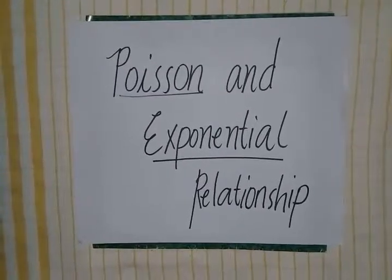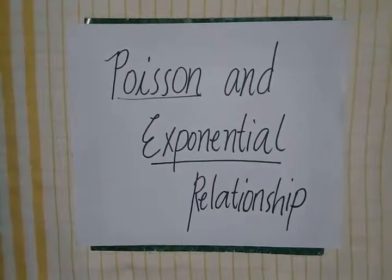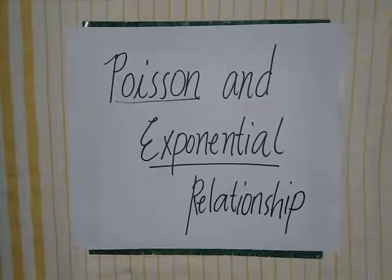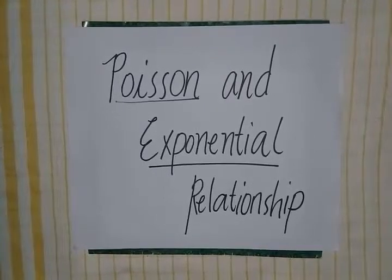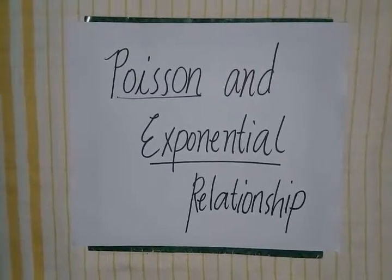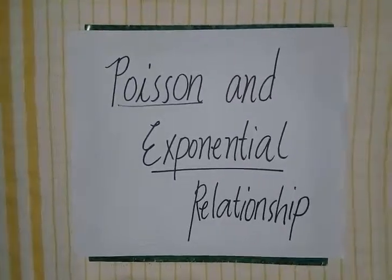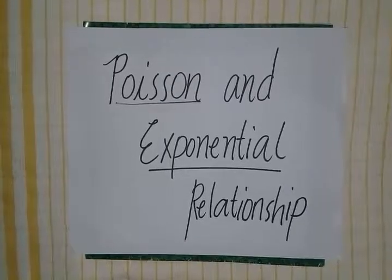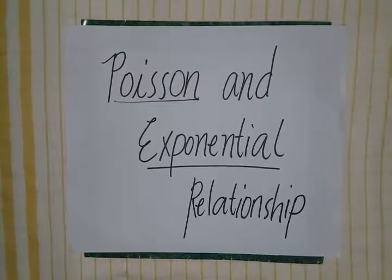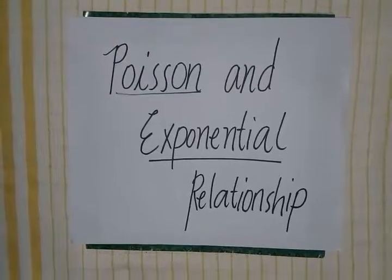Poisson and exponential distributions are special parametric families of univariate distributions. Before discussing the relationship of these two distributions, let us recall what each one is.